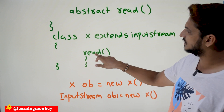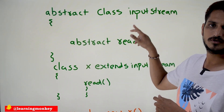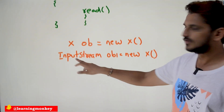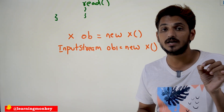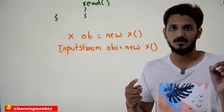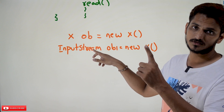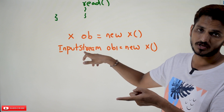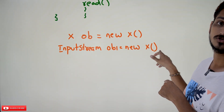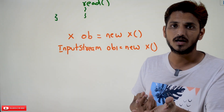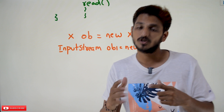Another point you have to understand: in our last class we discussed that a super class variable can refer to a sub class object. Most of the times we are going to use this concept in our next classes. InputStream is the super class. We create a reference ob1 for InputStream — a super class variable can refer to a sub class object: `InputStream ob1 = new X();`. X is a sub class object. This concept we are going to use much in our coming classes.